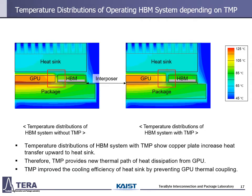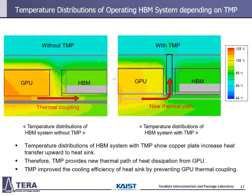This is the simulated temperature distributions of the operating HBM system depending on TMP. As you can see, the temperature distributions with TMP show that the copper plate increases heat transfer upward to the heat sink, and it seems to show that TMP prevents GPU thermal coupling. Enlarging the figure, it clearly represents that TMP provides a new thermal path for heat dissipation from GPU. Without TMP, the heat from GPU moves horizontally to HBM, but with TMP, the heat transfers to TMP and goes upward to the heat sink. Therefore, TMP improves the cooling efficiency of the heat sink by preventing GPU thermal coupling.